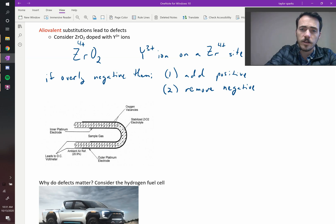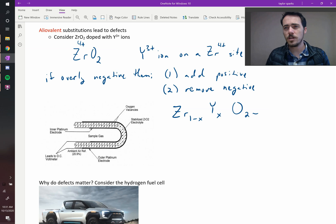So the formula is going to look something like this: zirconium, and now it's going to be 1 minus x, yttrium x. So for every yttrium that we add, we're going to take out a zirconium, hence 1 minus x and x. And then oxygen is going to be 2 minus something. Now, the question is how much? How much oxygen do we need to remove?